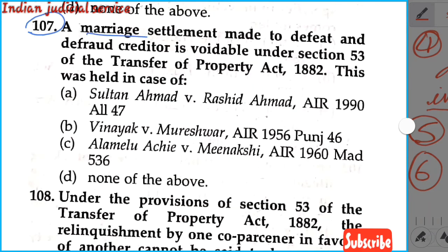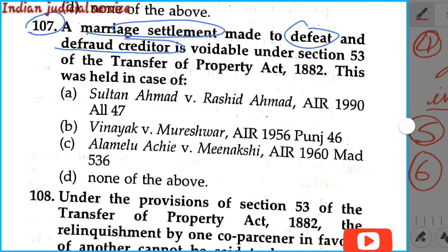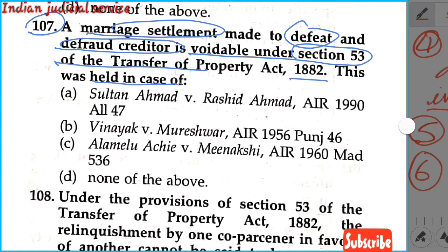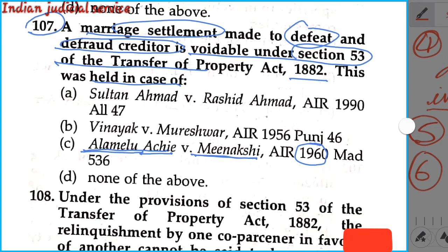Question number 107: A marriage settlement made to defeat and defraud creditors is voidable under section 53 of the Transfer of Property Act 1882. This was held in the case of Ala Melu Ammal versus Meenakshi, AIR 1960. Our answer is option C.